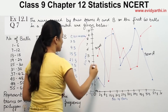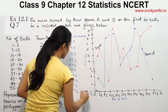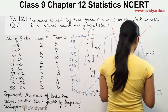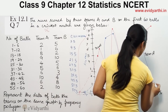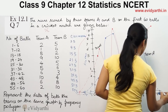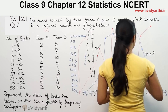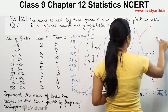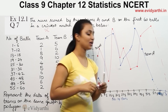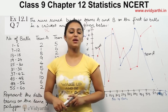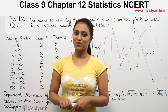Now for Team B, join all the plotted points according to the class marks. Similarly, the last point will also be joined. Extend the line to meet the x-axis. This was the frequency polygon for both teams. This was the 7th question from exercise 14.3. See you in the next video for more questions. Goodbye.